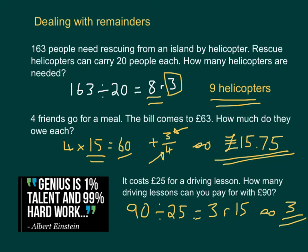And in the final example, of course, we'd have to do 90 divided by 25, which would give us 3 remainder 15. And that's saying I can afford 3 full lessons, and because I haven't got enough money for the fourth one, I've not got £100. Of course, in this case, I have to round down 3 lessons.